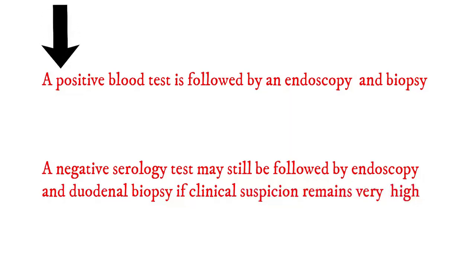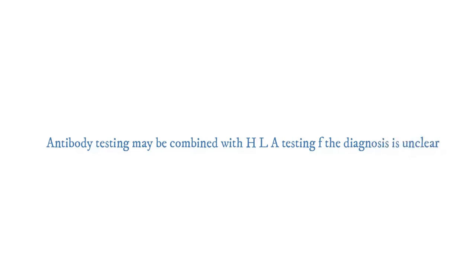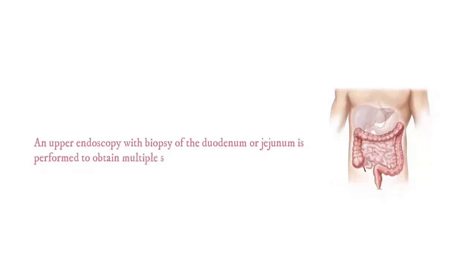A positive blood test is still followed by an endoscopy and biopsy. A negative serology test may also be followed by endoscopy and duodenal biopsy if clinical suspicion remains very high. Antibody testing may be combined with HLA testing if the diagnosis is unclear. An upper endoscopy with biopsy of the duodenum or jejunum is performed to obtain multiple samples.